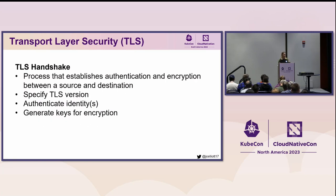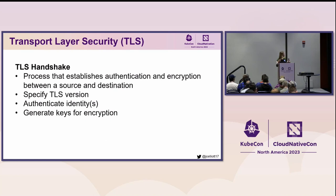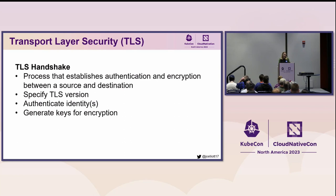The TLS handshake is the process by which a certificate — or certificates, in the case of mutual TLS — are exchanged, verified, and an encryption strategy is agreed upon. There are several different TLS versions, and the exact process of the handshake varies, but there are some common threads. Both the client and the server must agree on which version of TLS they're going to use. If they don't agree on how they're going to trust each other, that's just not going to go well. They also exchange and authenticate their identities, and then generate keys for future communications, though that part varies depending on the TLS version and cipher suite being used.